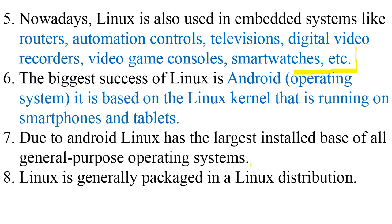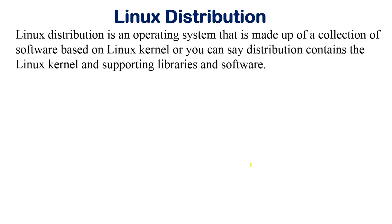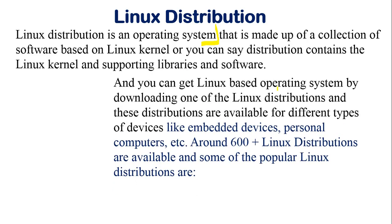Now let's talk about Linux distributions. A Linux distribution is an operating system made up of a collection of software based on the Linux kernel. A distribution contains the Linux kernel along with supporting libraries and software. You can get a Linux-based operating system by downloading one of these distributions, which are available for different types of devices like embedded devices and personal computers.